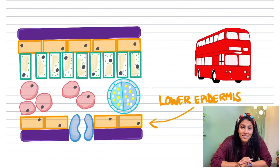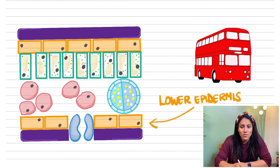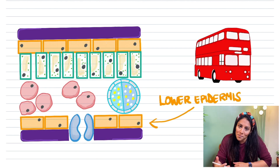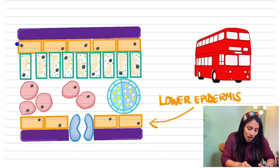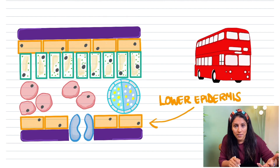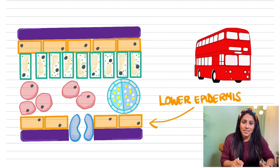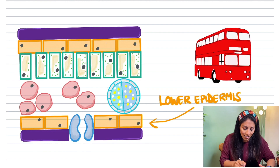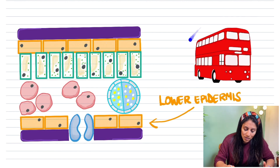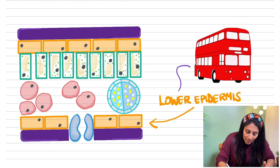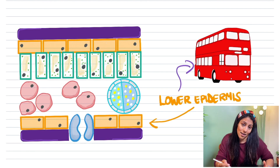This takes us to the lower part of the leaf. These orange cells at the bottom are the lower epidermis. You might notice a similarity with the upper epidermis — it's the same type of cell but, as it says on the tin, it's the lower epidermis. To help you remember, we use the double decker bus analogy again, but this time we're looking at the lower deck.